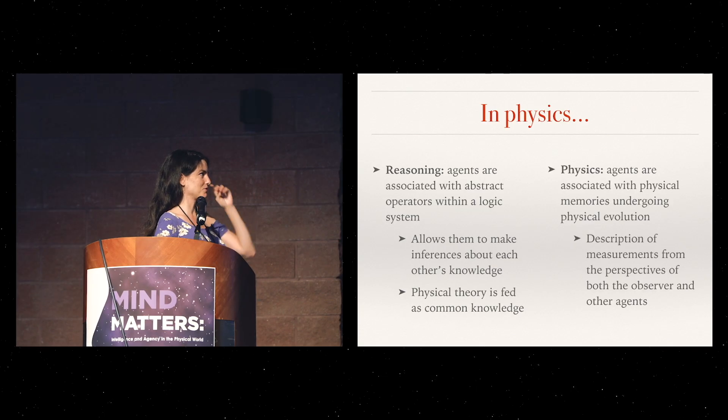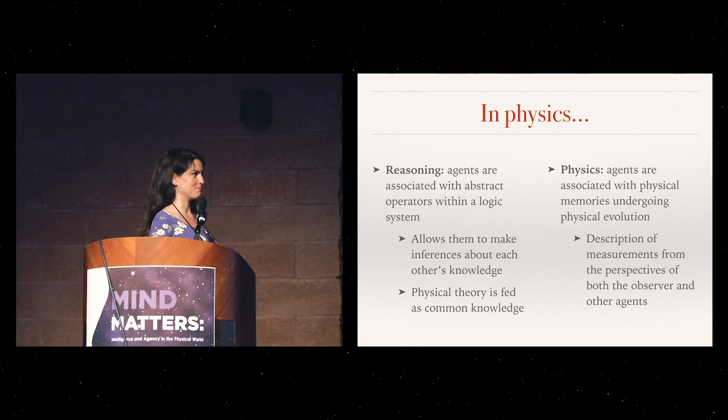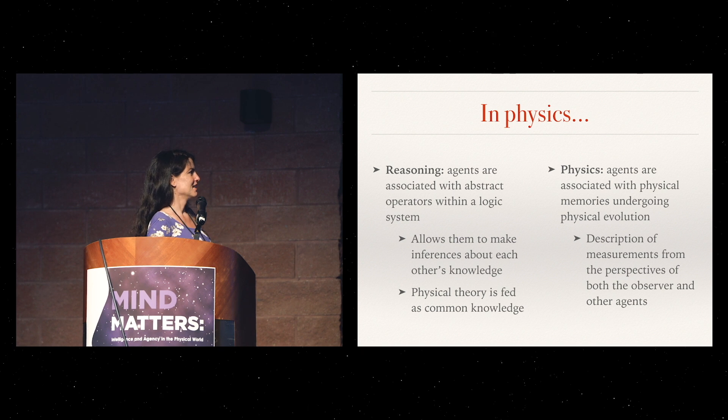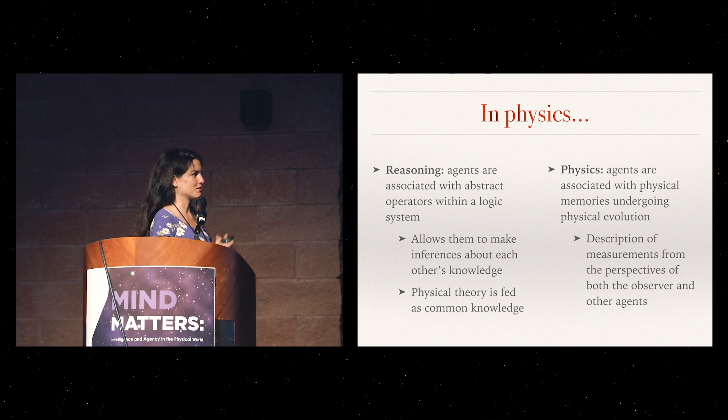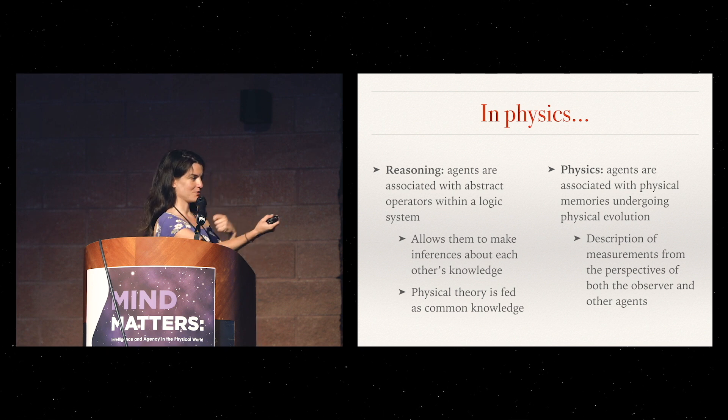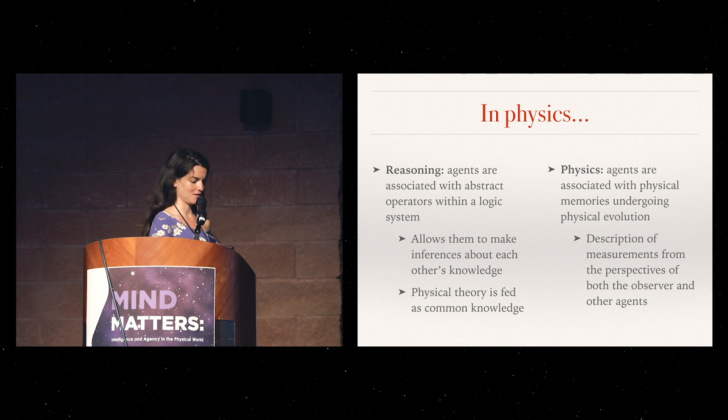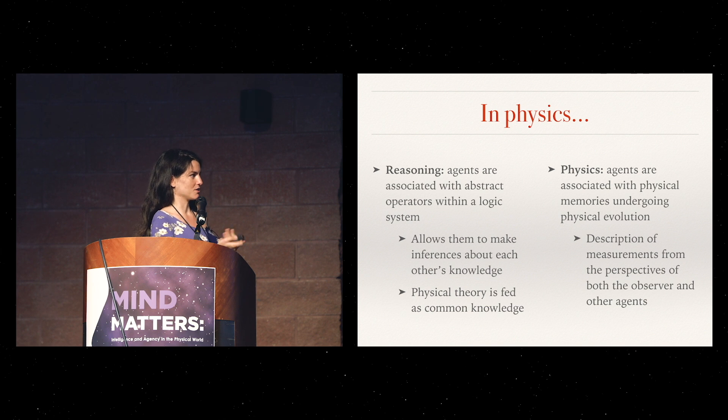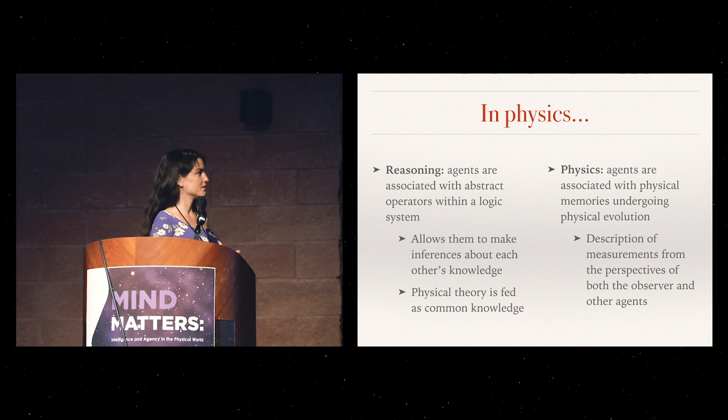In physics when we think about agents, mostly as people, this is used for example to derive the theory of relativity by Einstein. It started from the idea of having two different agents traveling at different speeds and how they would relate their own views.